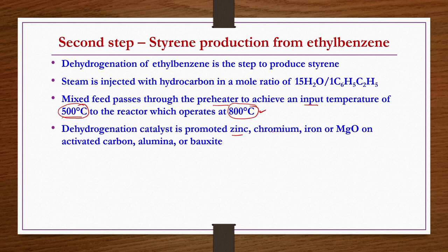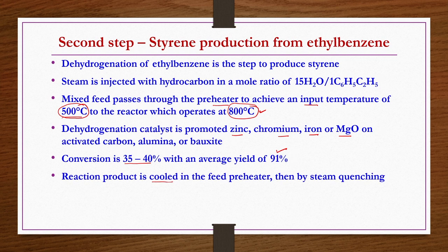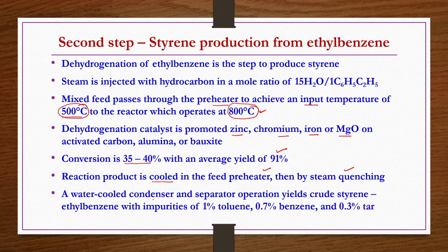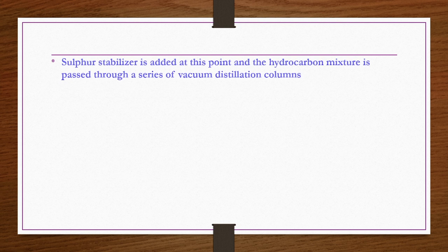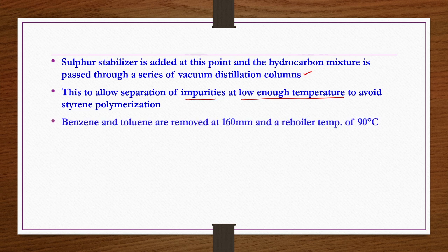The dehydrogenation catalyst is promoted zinc, chromium, iron, or magnesium oxide on activated carbon, alumina, or bauxite. Conversion is 35–40% with an average yield of 91%. The reaction product is cooled in the feed preheater then by steam quenching. A water-cooled condenser and separator yield a crude styrene-ethylbenzene mixture with minor impurities of toluene, benzene, and tar. A sulfur stabilizer is added and the hydrocarbon mixture is passed through a series of vacuum distillation columns to separate impurities at low enough temperatures to avoid styrene polymerization. Benzene and toluene are removed at 160 mm absolute pressure and a reboiler temperature of 90°C.